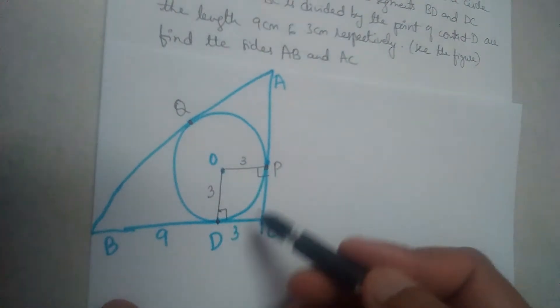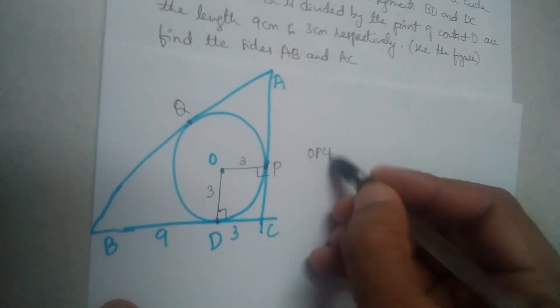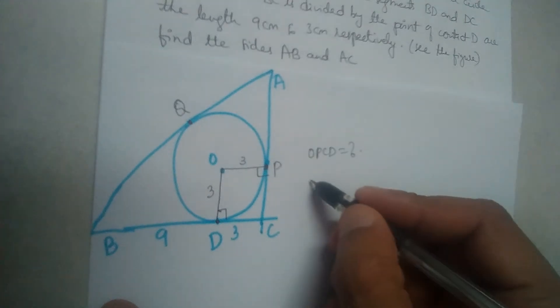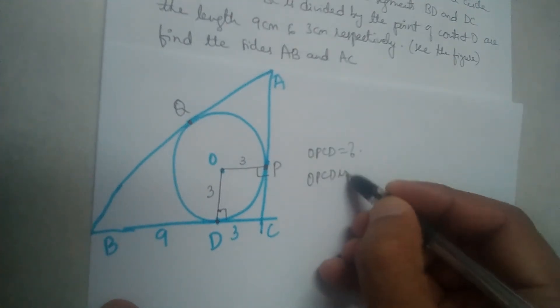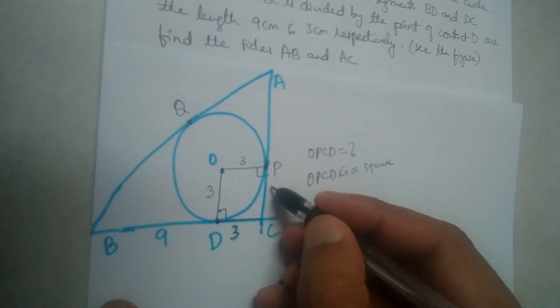Now, what type of polygon is OPCD? It is a square. OPCD is a square - 3, 3, and 3, and this should also be equal to 3.